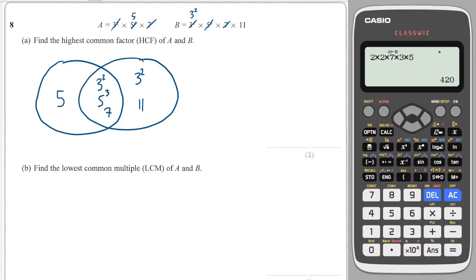Highest common factor is everything in the middle. So that's 3 squared times 5 cubed times 7, which is 7875.